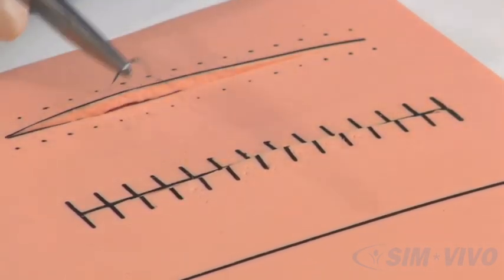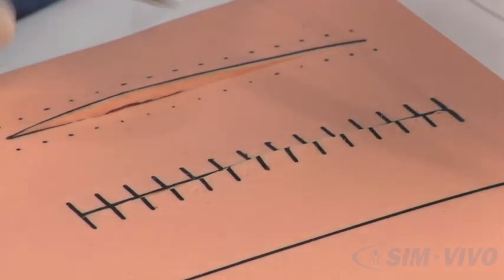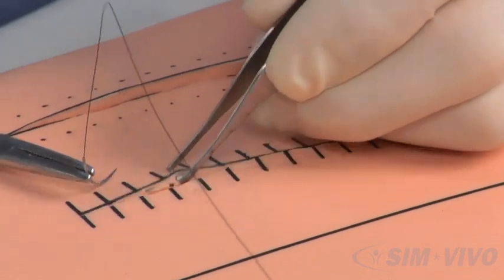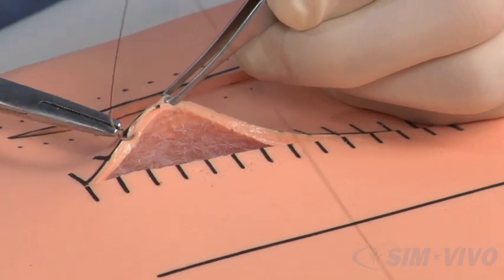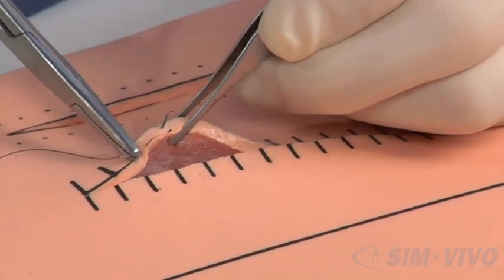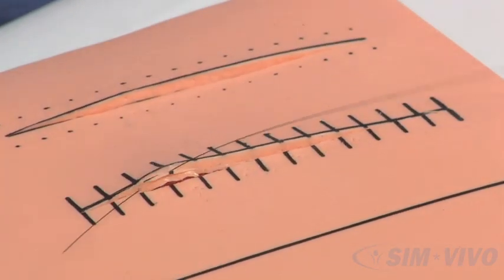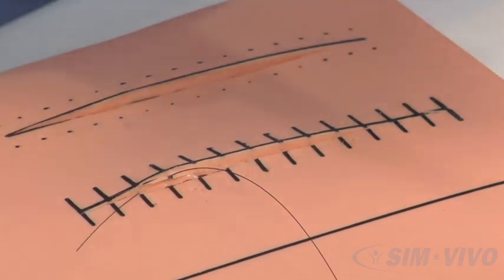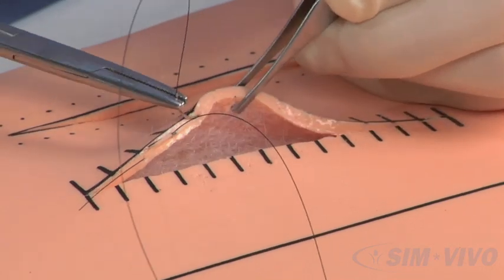Load the needle, pick a cross hatch, go one cross hatch over. Lift up the skin, enter and exit, rotate the needle through. The little bit remaining, lift up here, enter and exit in the width of the skin, trying to maintain the depth.